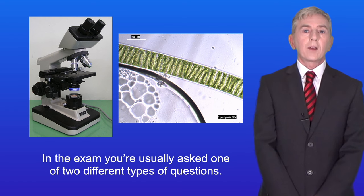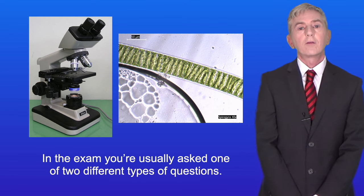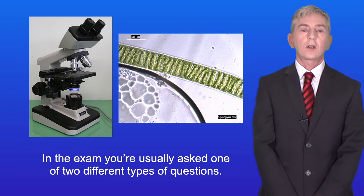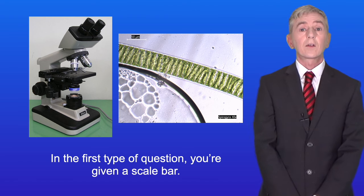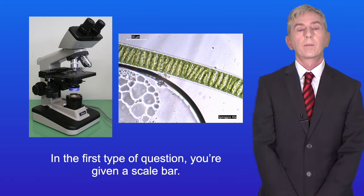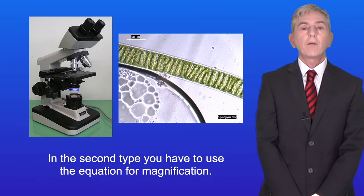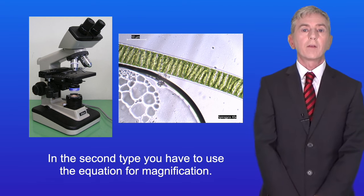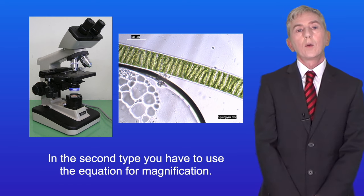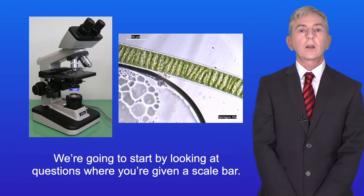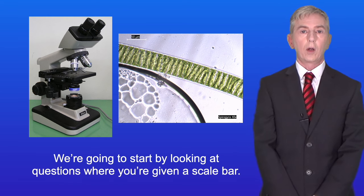In the exam you're usually asked one of two different types of questions. In the first type of question you're given a scale bar. In the second type you have to use the equation for magnification. We're going to start by looking at questions where you're given a scale bar.